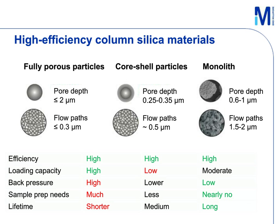UHPLC columns packed with sub-2 micron fully porous particles provide ultra-fast separations under ultra-high pressures. However, due to the narrow flow path inside the columns, UHPLC columns can be easily clogged if sample preparation is not careful. Additionally, packed bed shifting under pressure shock contributes to shorter column lifetimes. Core-shell particles provide high separation performance under slightly lower back pressure, but the solid core structure reduces loading capacity due to reduced surface area. Silica monolith helps resolve all those issues with its highly porous structure.